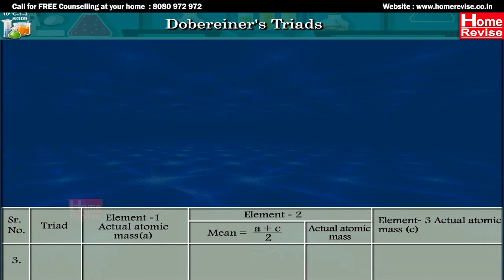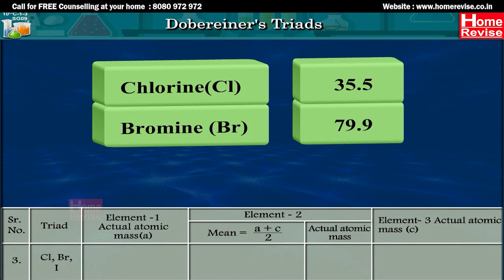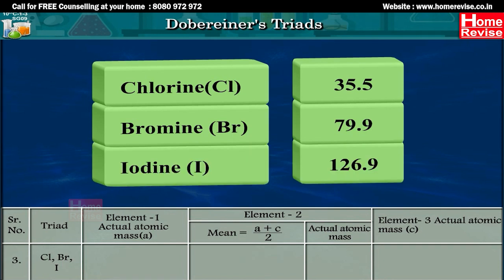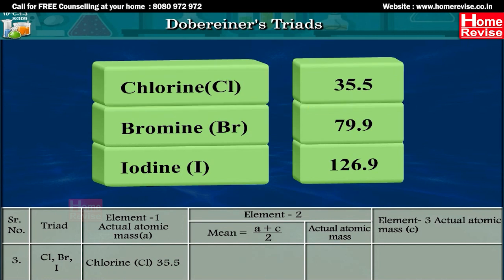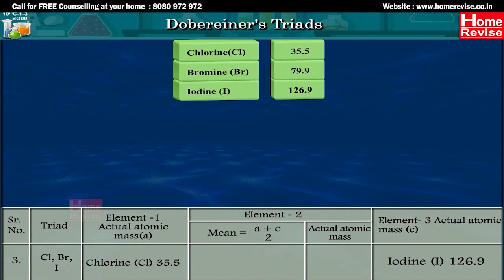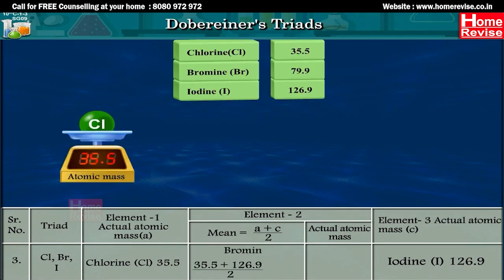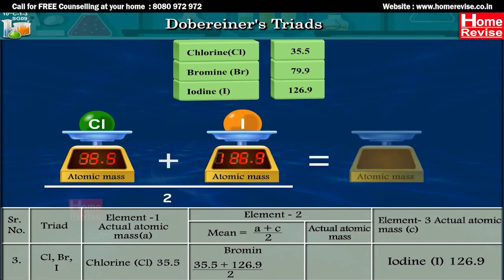In the triad chlorine, bromine, and iodine, the actual atomic mass of chlorine is 35.5, and the actual atomic mass of iodine is 126.9. The mean atomic mass of bromine is (35.5 + 126.9) / 2, that is 81.2, while the actual atomic mass of bromine is 79.9.